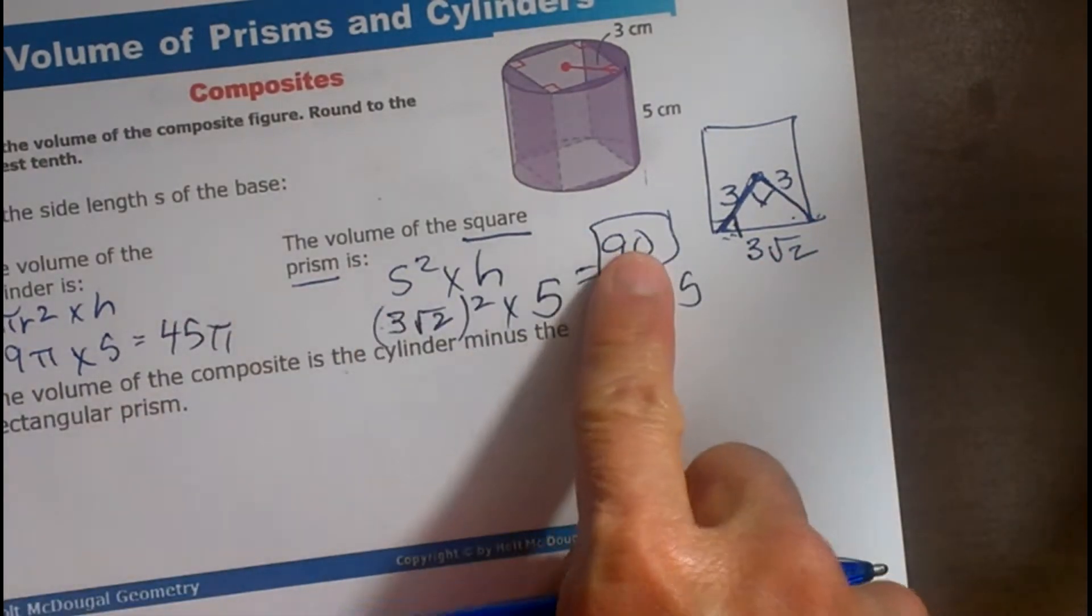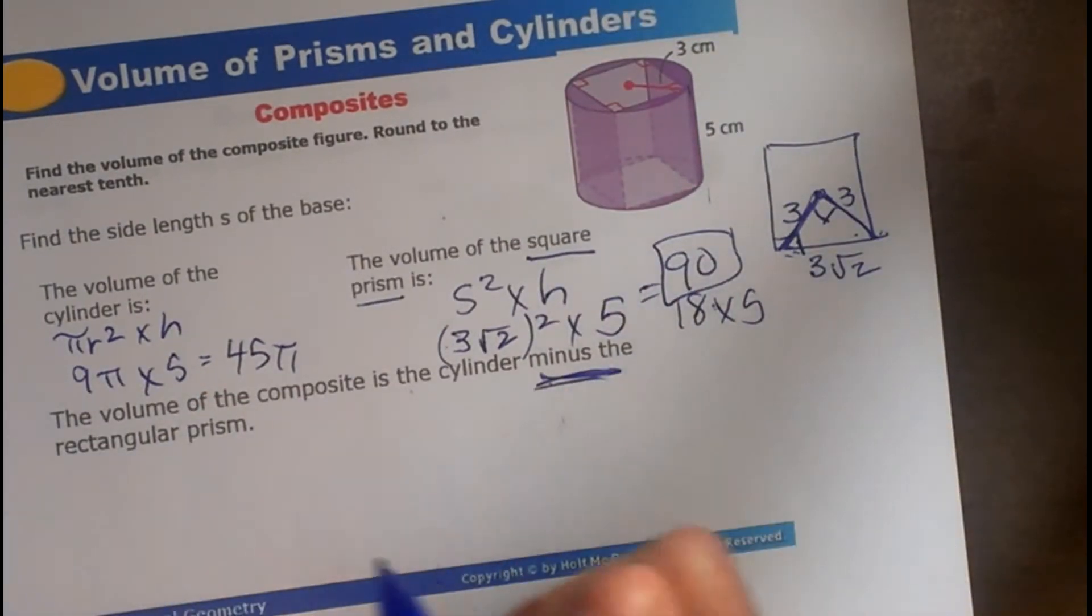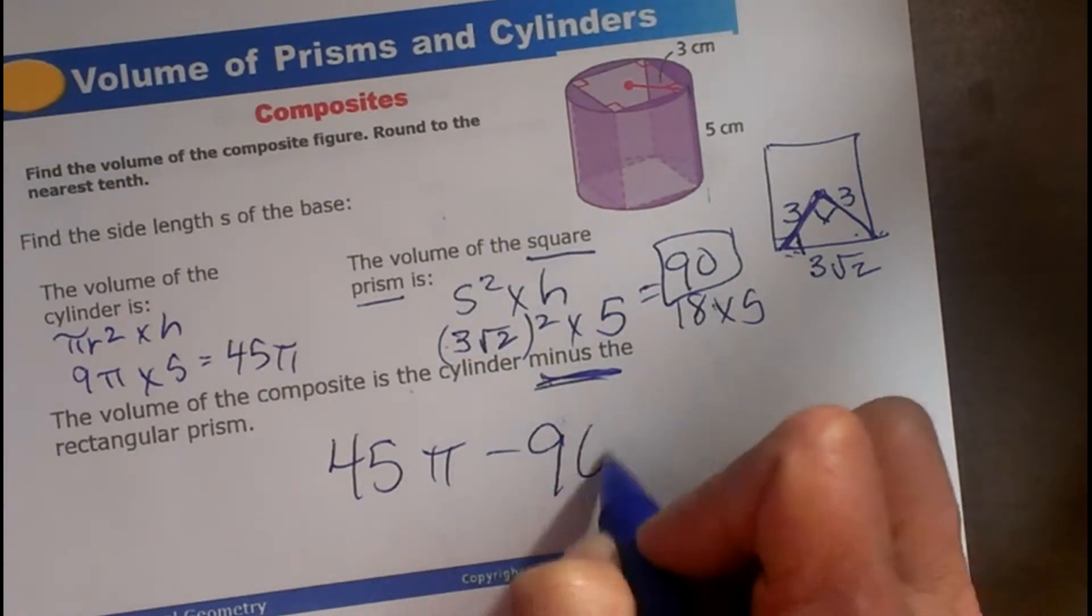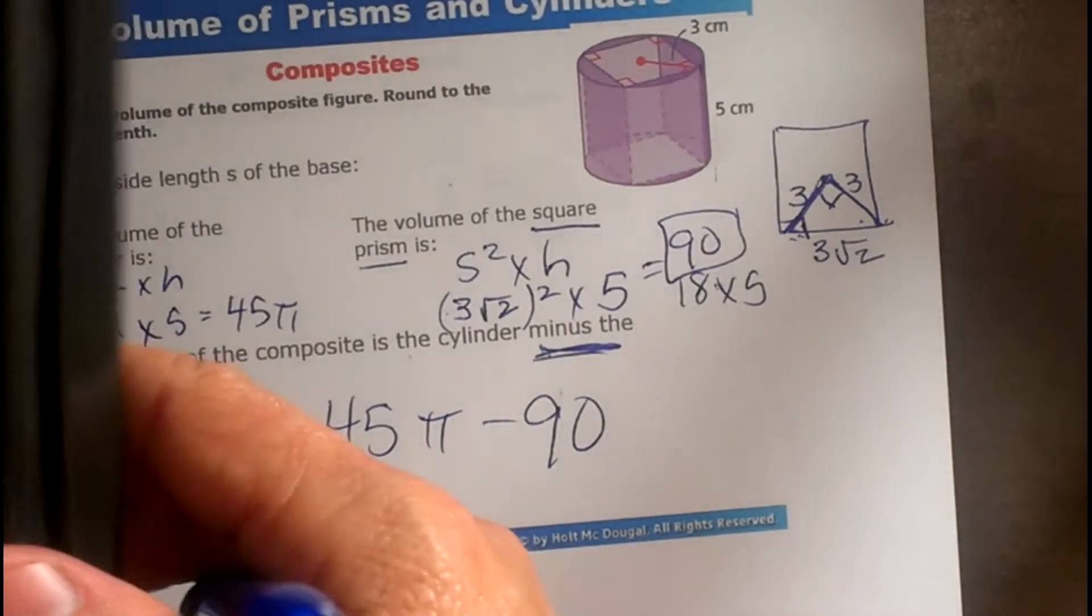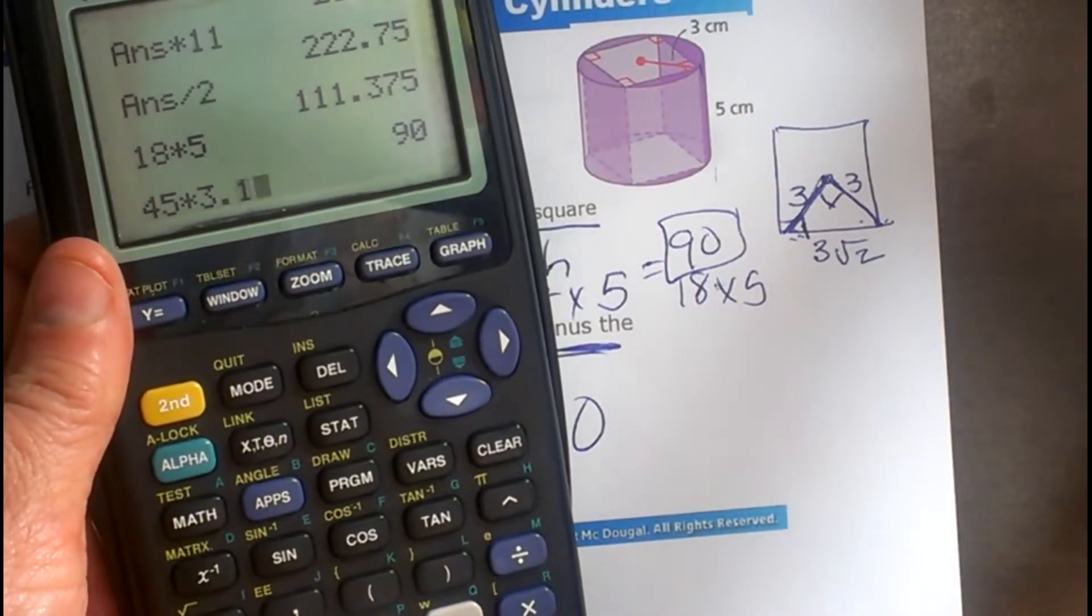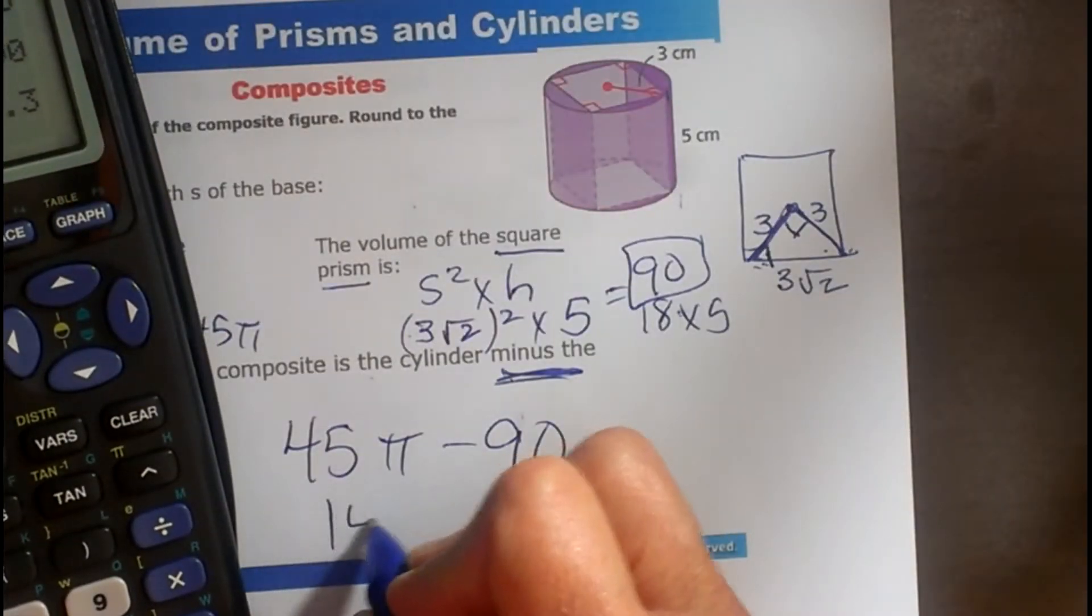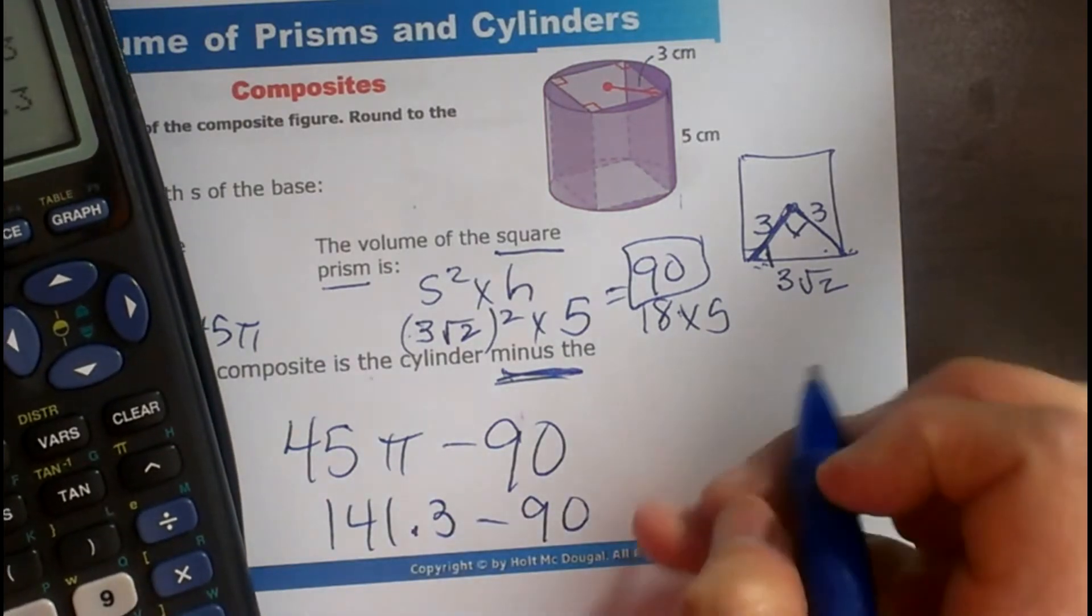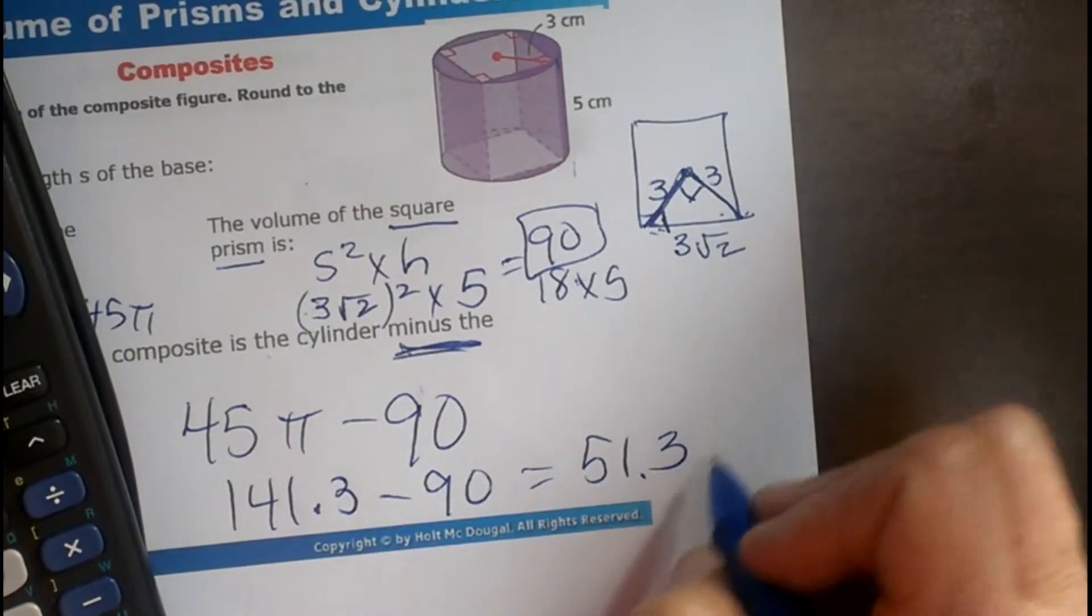Now what do I do with these two since one is cut out? Instead of adding this time I am going to subtract them, so it is going to be 45π minus 90. Now you may think, oh 45 is smaller than 90, how could you subtract this? But watch, 45 times 3.14, it is not less than 90, it is 141.3 minus 90, 51.3 if you were asked for the decimal.